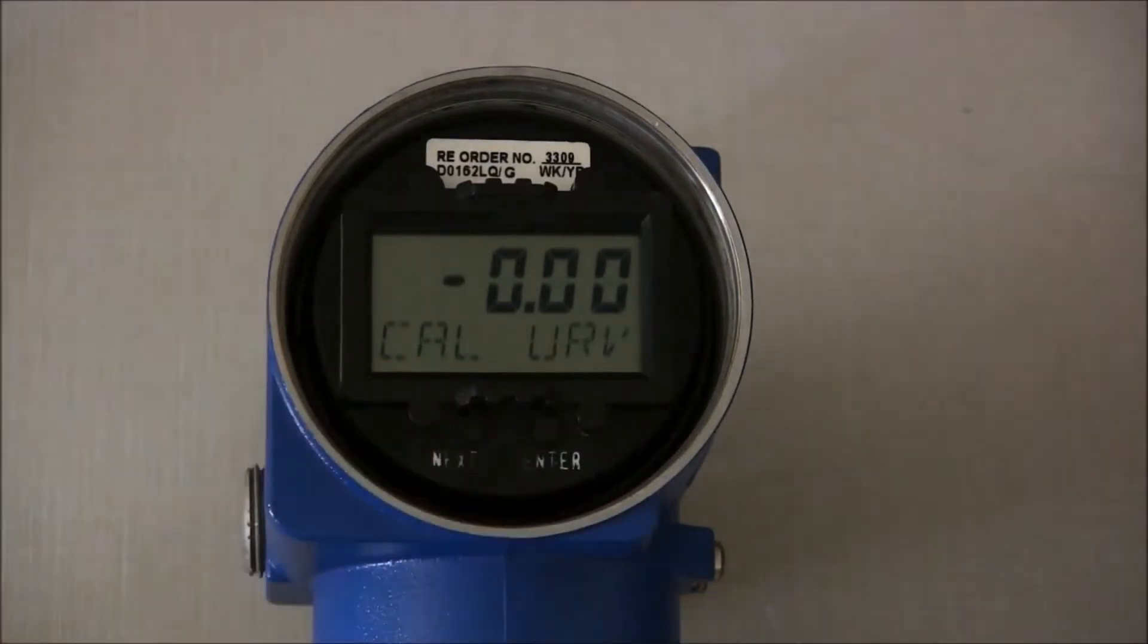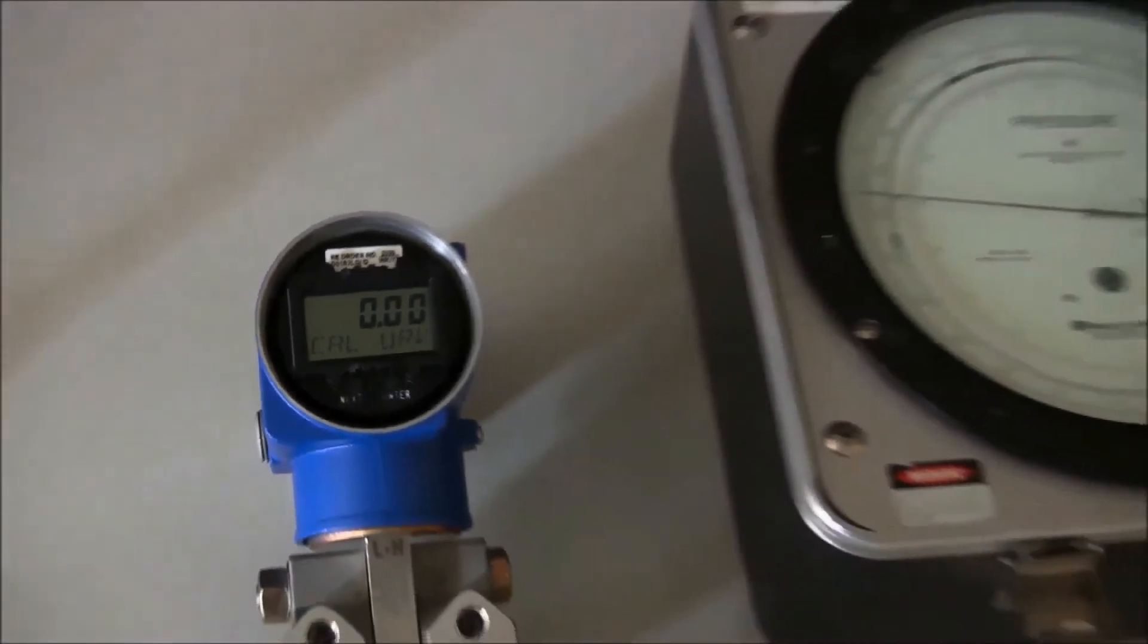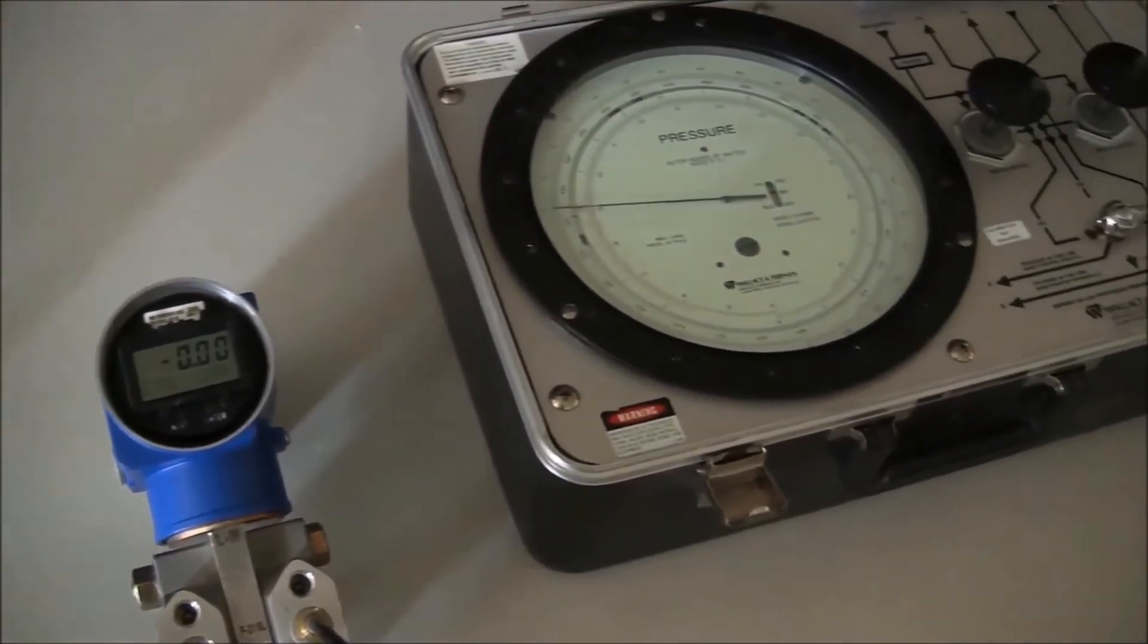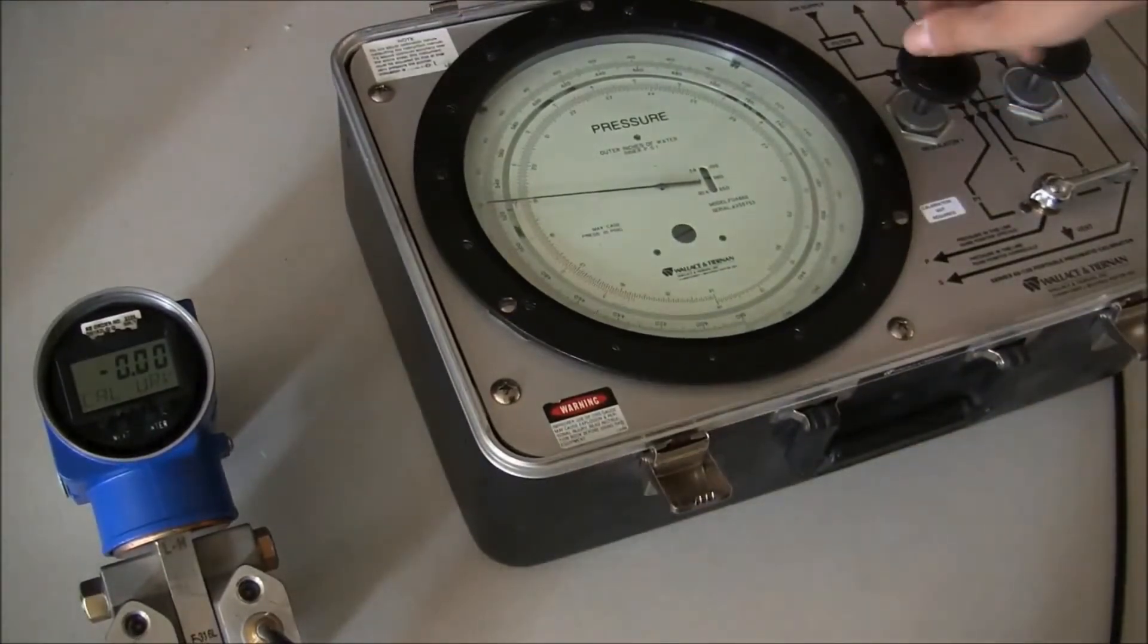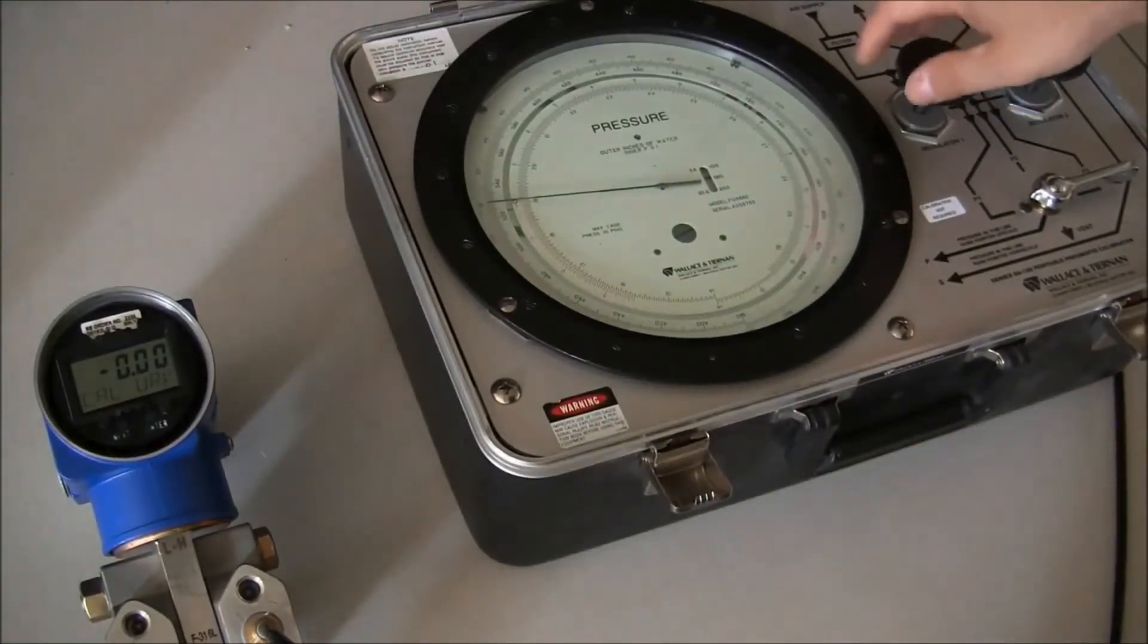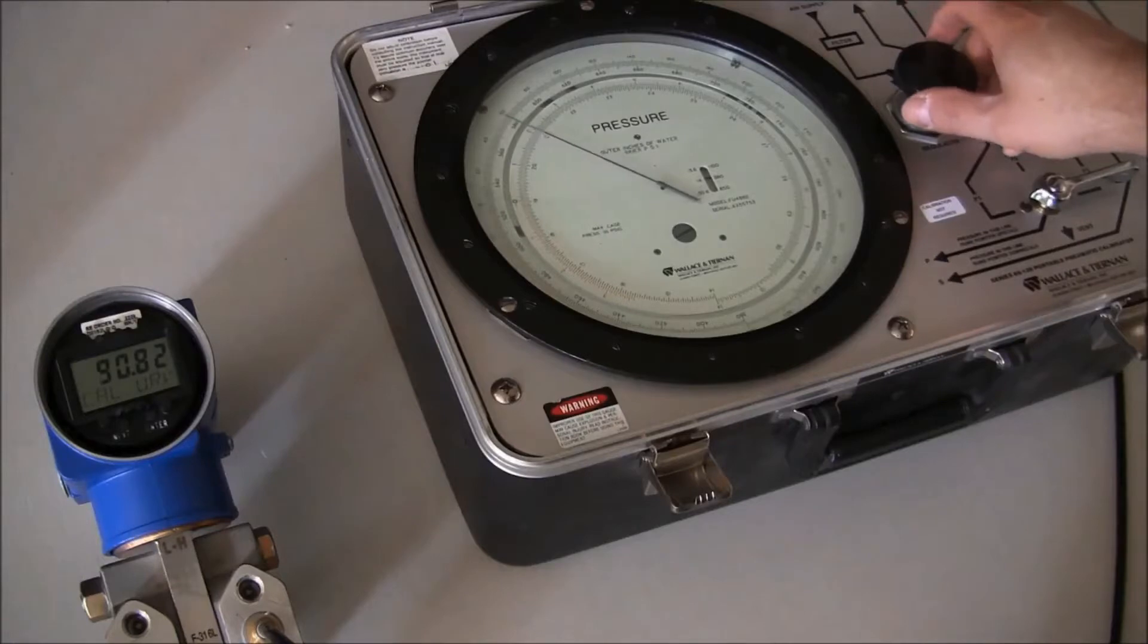Press Next and CalURV will be displayed. At this point, we need to apply the upper range value pressure to the transmitter. In our specific scenario, this would be 100 inches of water.